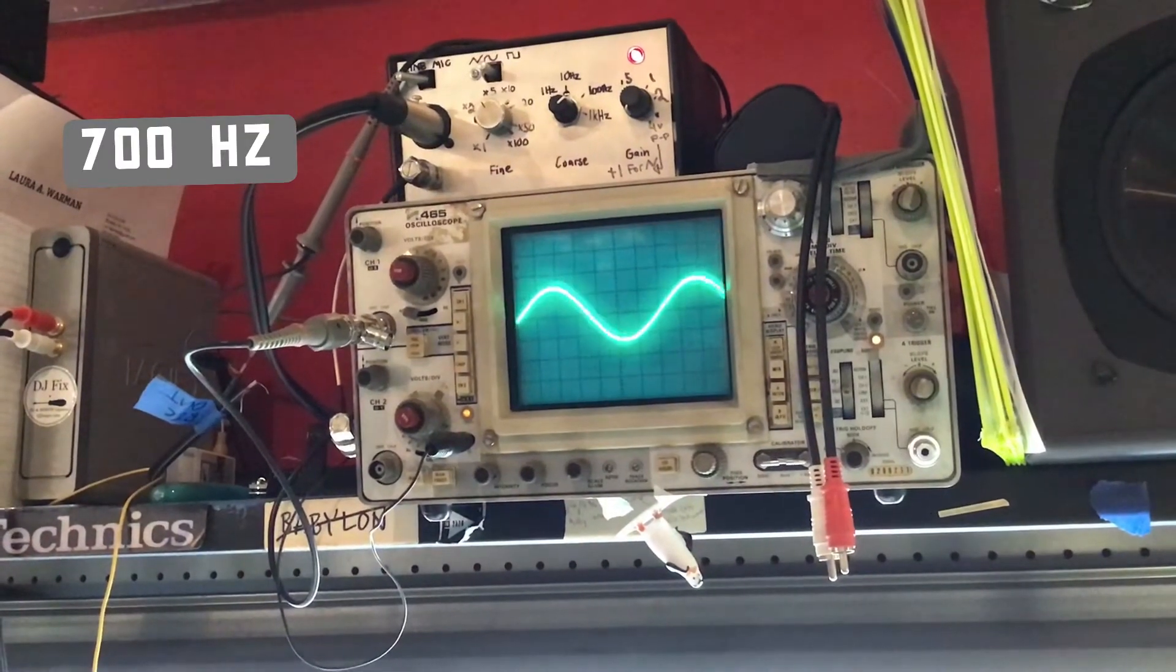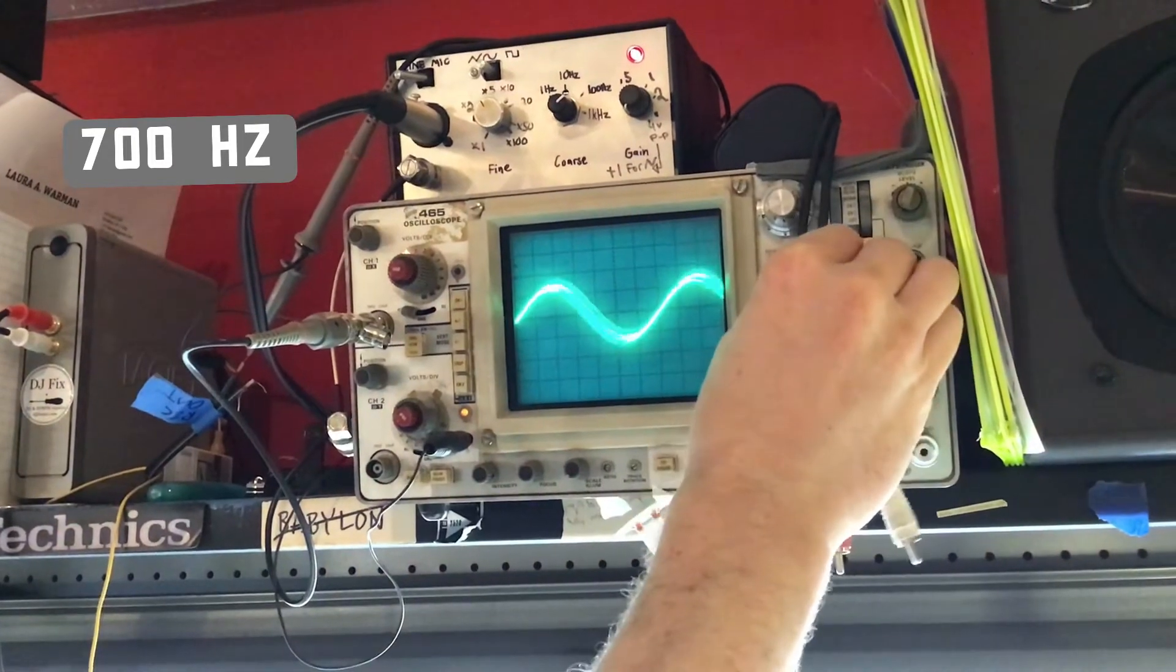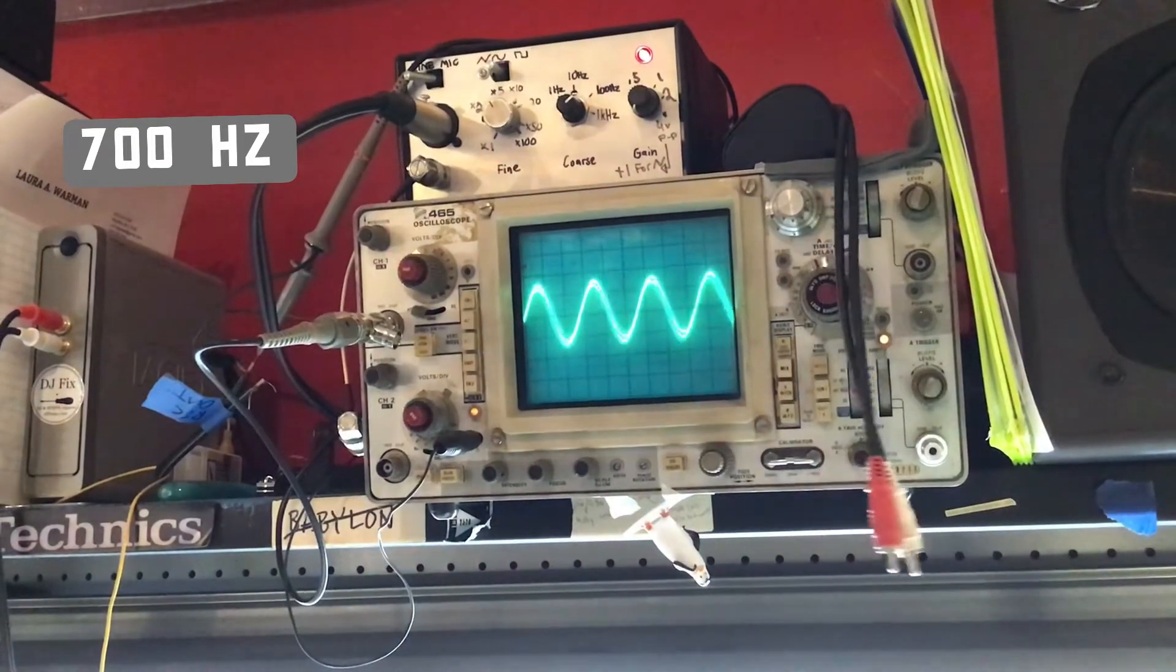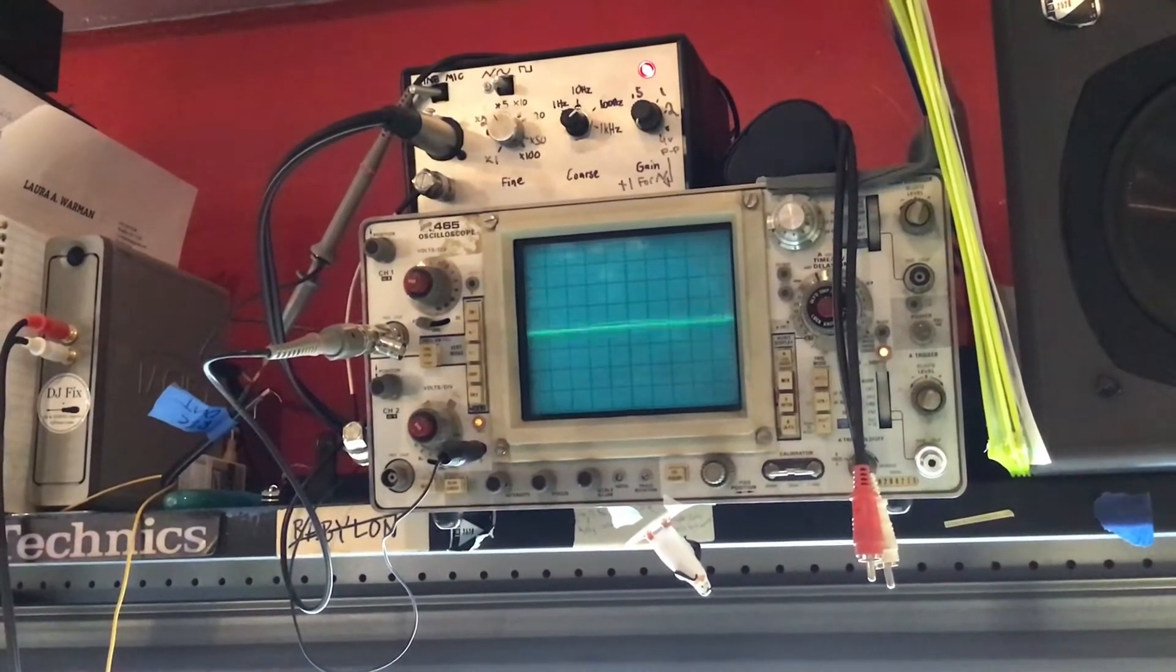700 cycles. Here's 700. 700 looks pretty good. We're kind of dipping into the lower end of the mid range now. Still definitely in the vocal range.